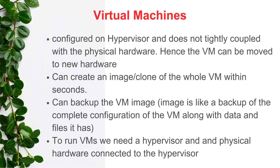Virtual machines are configured on the hypervisor and are not tightly coupled with the physical hardware. Because of that, VMs can be moved to new hardware, and any defective hardware can be replaced without impacting the VMs running on the hypervisor. The hypervisor also provides functionality to create an image or copy of the VM and the ability to clone the whole VM within seconds. It further allows taking this copy to another hypervisor of the same product and deploying the VM in a different location entirely. The image is a backup of the complete configuration of the VM along with its data and files.